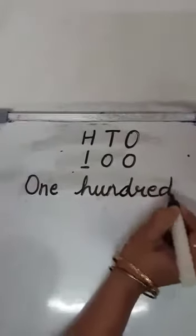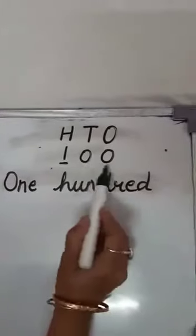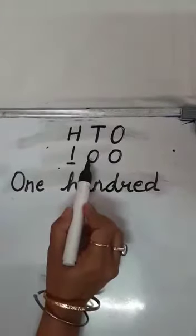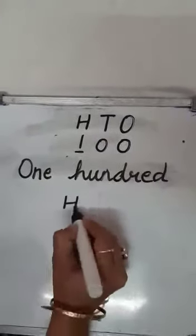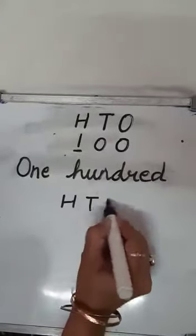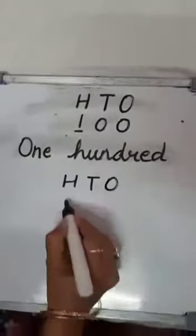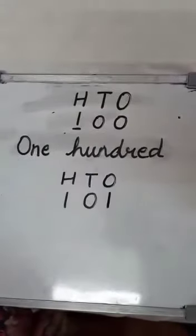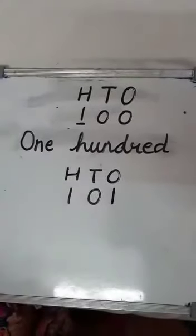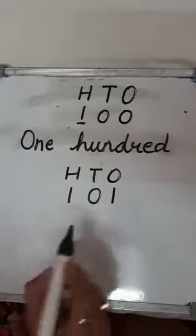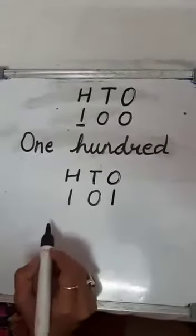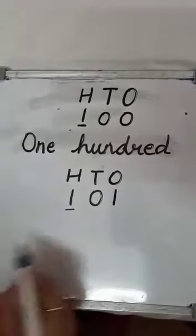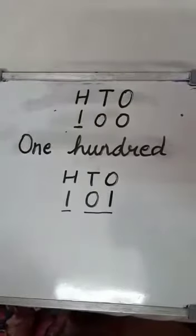Because there is no number written at the 1s and 10s places. Now here is a trick to learn this: you can divide your number into two parts. This is the first part and this is the second part.